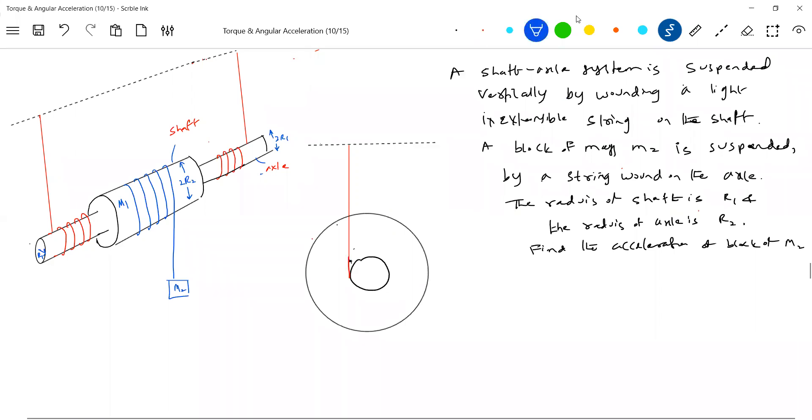So, blue color string should come from here, no? No, no. Let's analyze all. So, here the tension T1, T1 by 2. T1 by 2. Here only tension T2. So, therefore, total tension will be T1. This is that axis O.